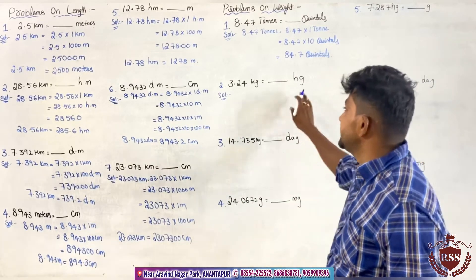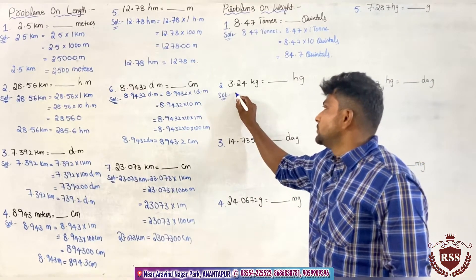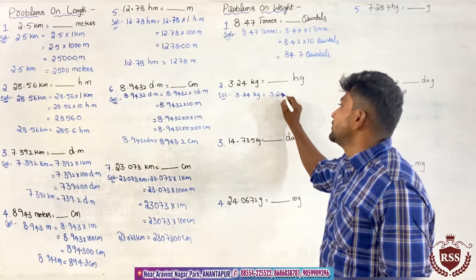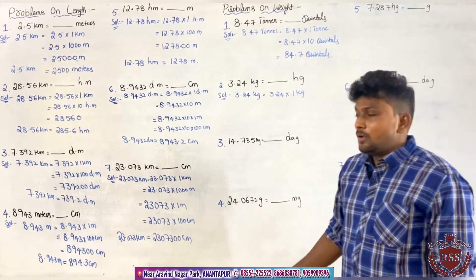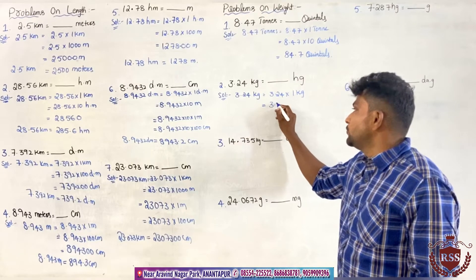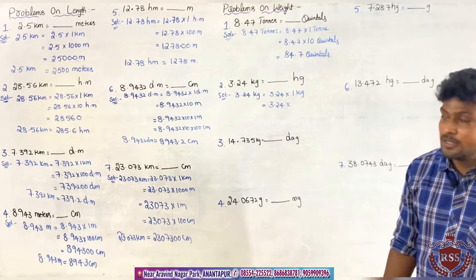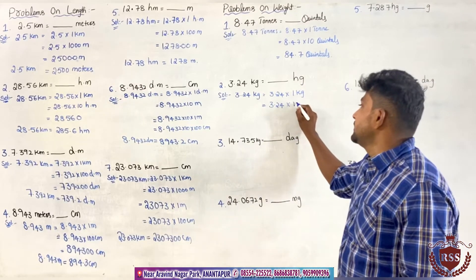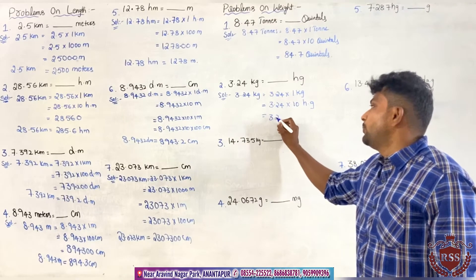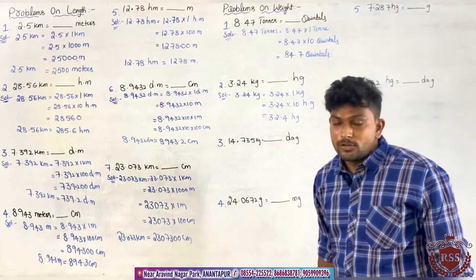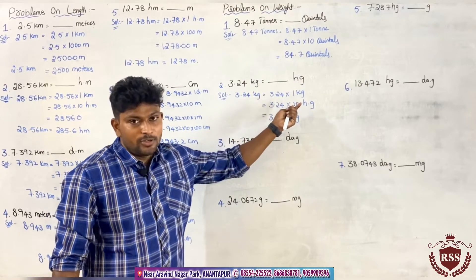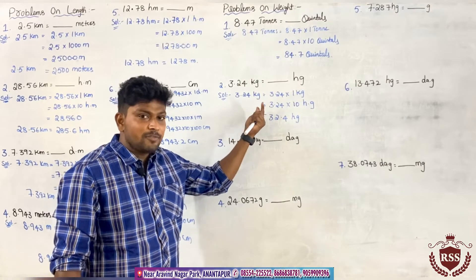Next: 3.24 kg into hectograms. So 3.24 kg equals 3.24 into 1 kilogram. Kilogram has to be converted into hectograms. 1 kilogram equals 10 hectograms. So 3.24 into 10 hectograms — the decimal point moves forward and it will be 32.4 hectograms. We are simply converting one unit to another; we just need to know the value of that unit in terms of another unit.